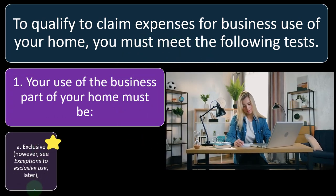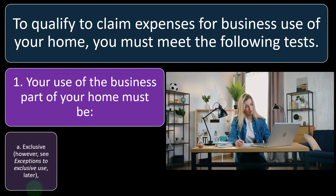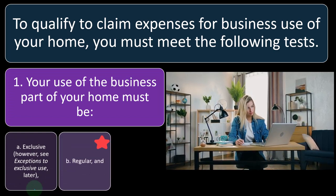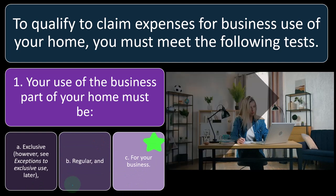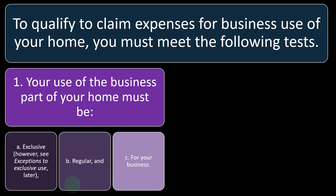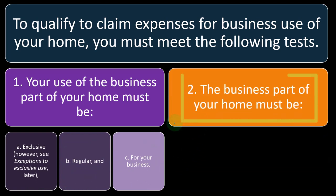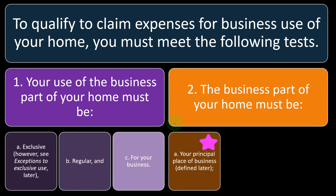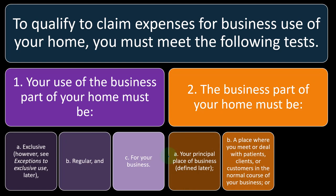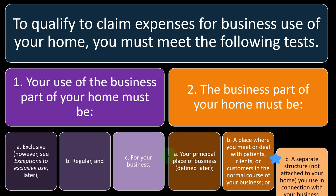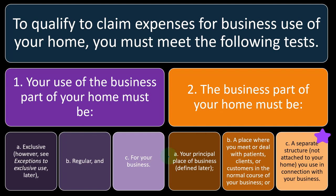Your use of the business part of your home must be: A) exclusive — though there are exceptions; B) regular; and C) for your business. Additionally, the business part of your home must be: A) your principal place of business, B) a place where you meet or deal with patients, clients, or customers in the normal course of your business, or C) a separate structure not attached to your home used in connection with your business.